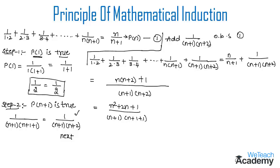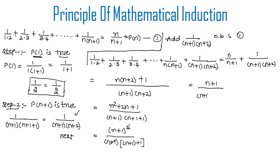We observe that the numerator n² + 2n + 1 is in the form a² + 2ab + b², which equals (a+b)². Writing this as (n+1)² divided by (n+1)(n+1+1), we can cancel (n+1) in the numerator and denominator, leaving (n+1)/(n+1+1).